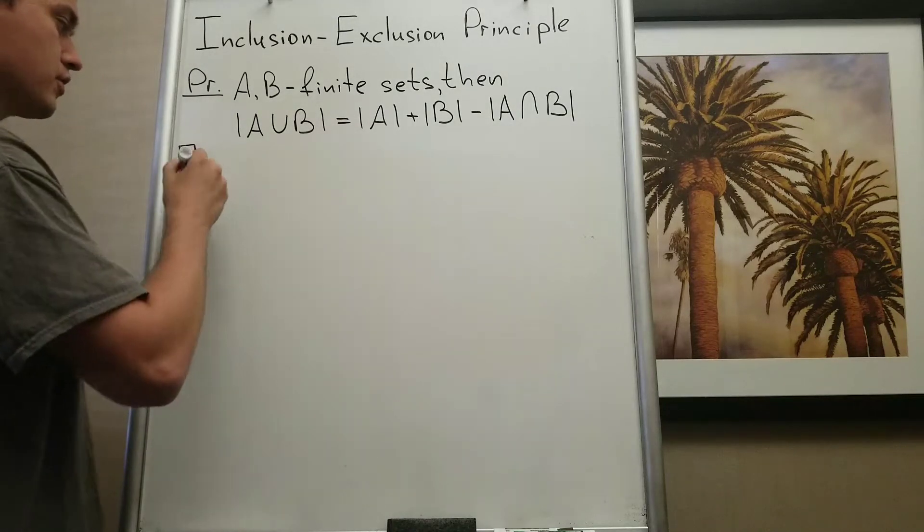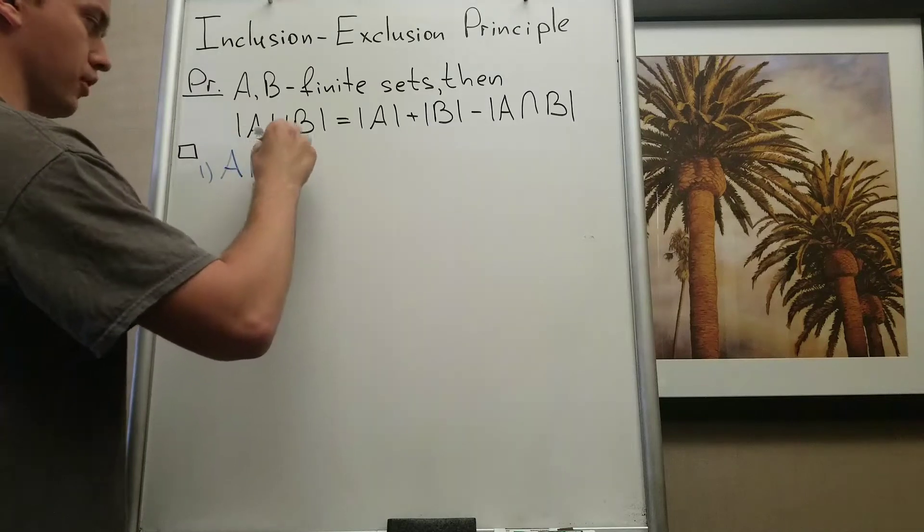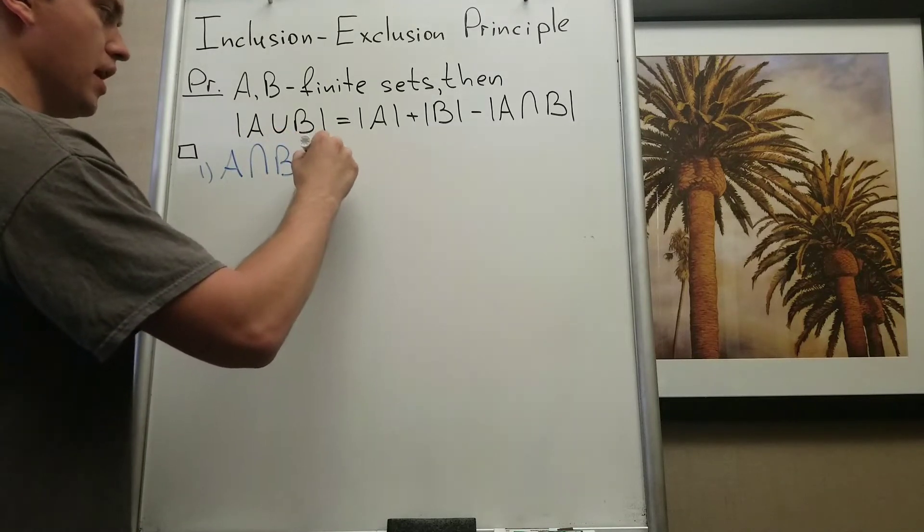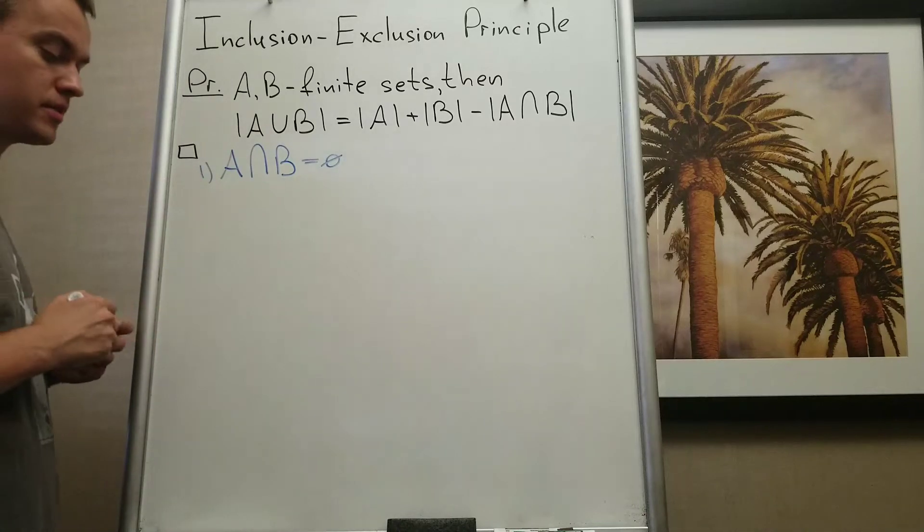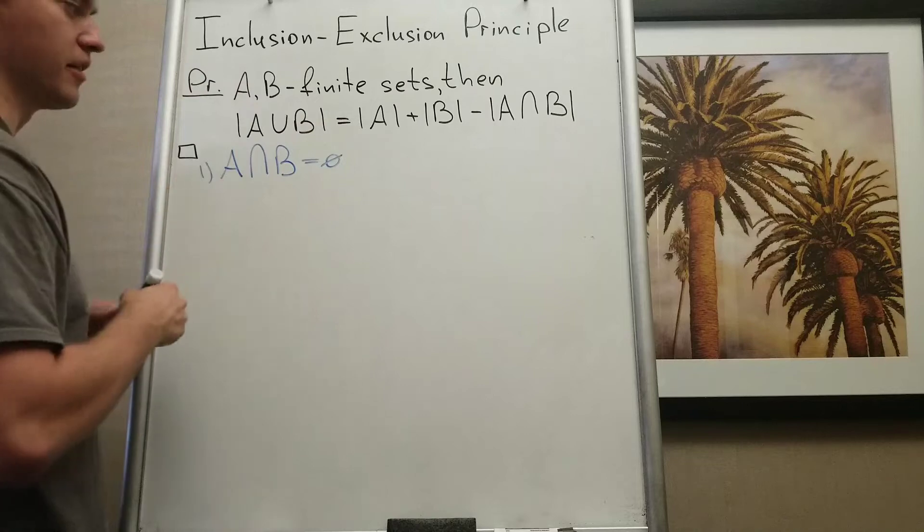Let's first consider and assume that A and B are disjoint. So when A and B are disjoint it means the intersection is empty set. But we know that A and B are finite.